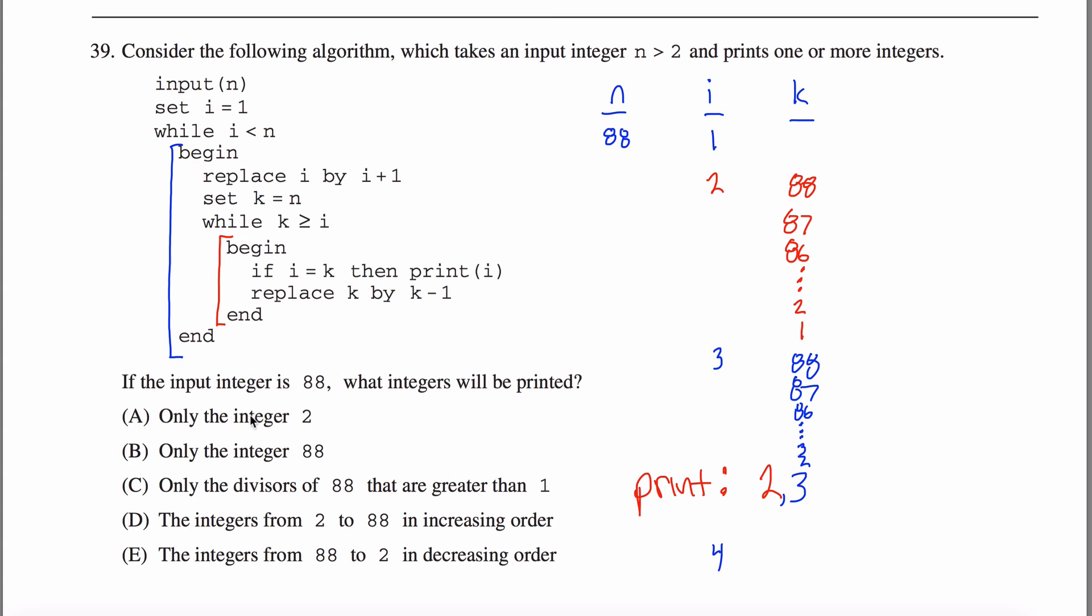So what have I done? Do I print only the integer 2? Nope. Do I print only the integer 88? Nope. What about the divisors of 88 that are greater than 1? No, because 3 is not a divisor of 88. That worked out kind of conveniently because if you take 88 and divide by 3, you get a remainder. If you sum the digits of 88, you get the number 16. If you sum the digits of 16, you get the number 7 and 3 doesn't divide 7. So 3 doesn't divide 88 by the divisibility by 3 trick that you probably already knew.